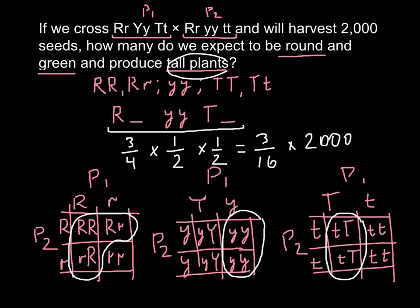If you don't have a calculator, you can multiply 2000 by 3 and then divide by 16. Multiplying 2000 by 3 gives 6000, and dividing by 16 gives 375. So 375 is our answer.